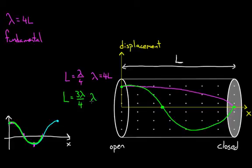And again, if I solve that for wavelength, I get 4L over three. So the next possible wavelength is 4L over three.